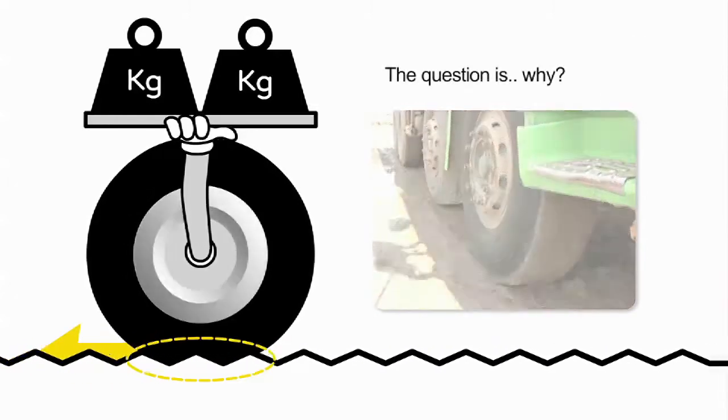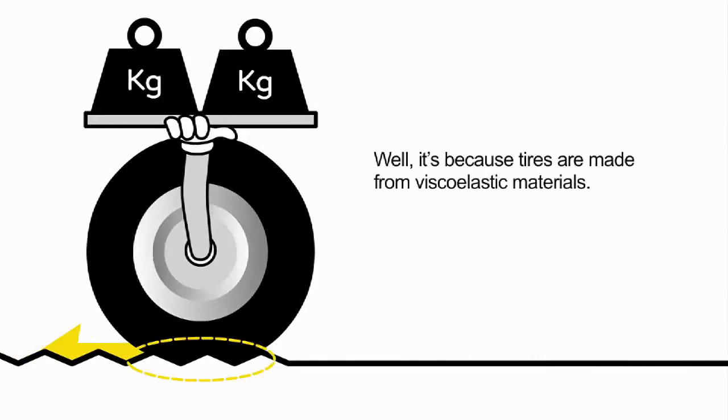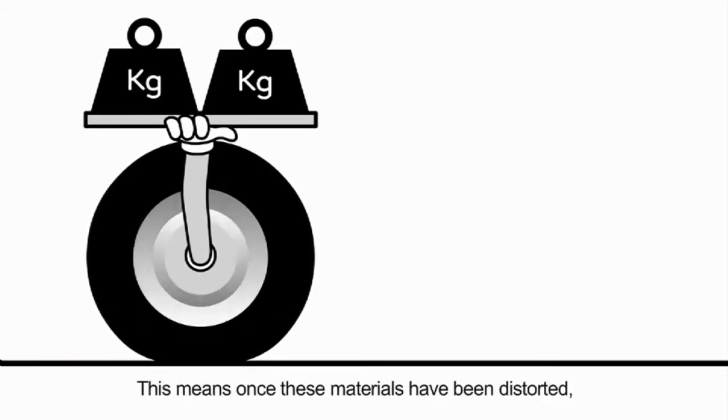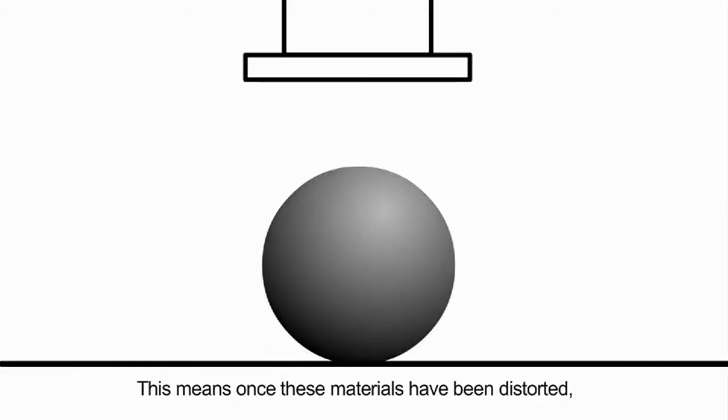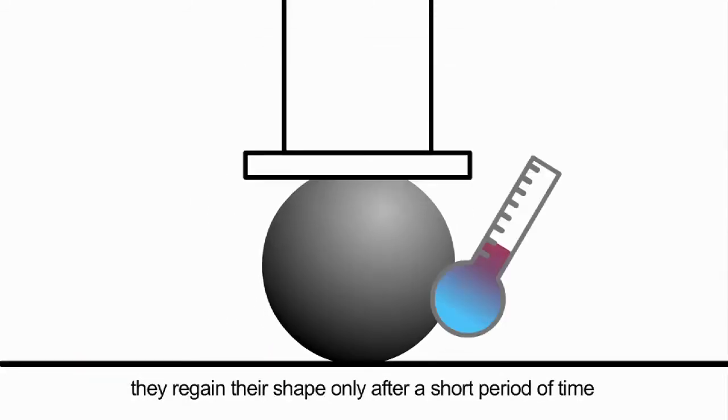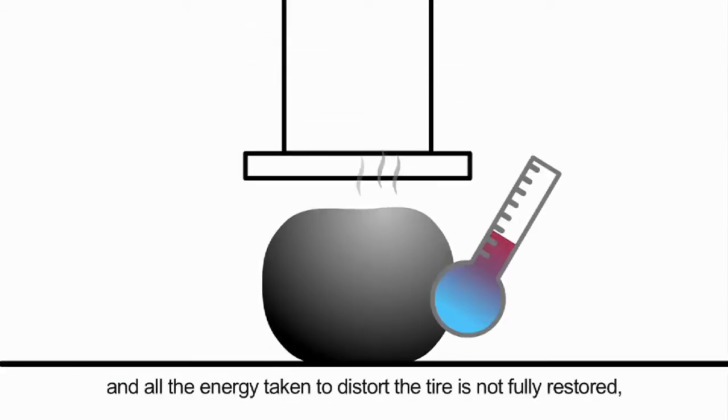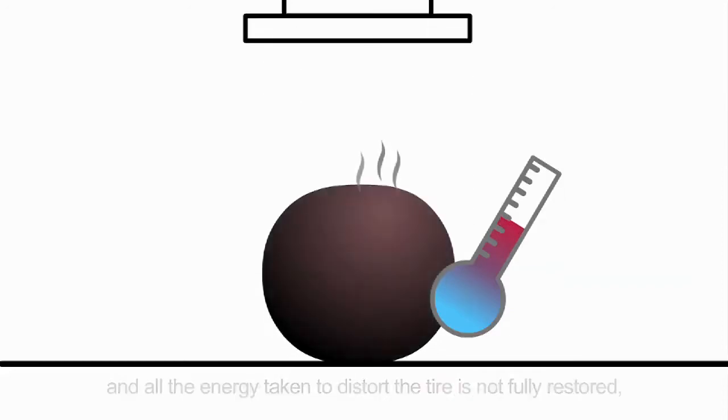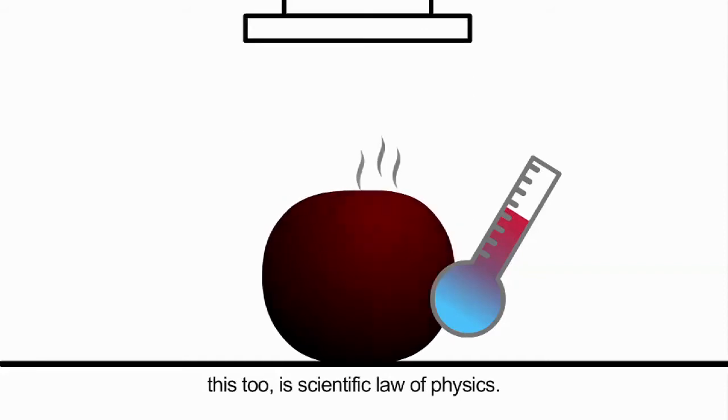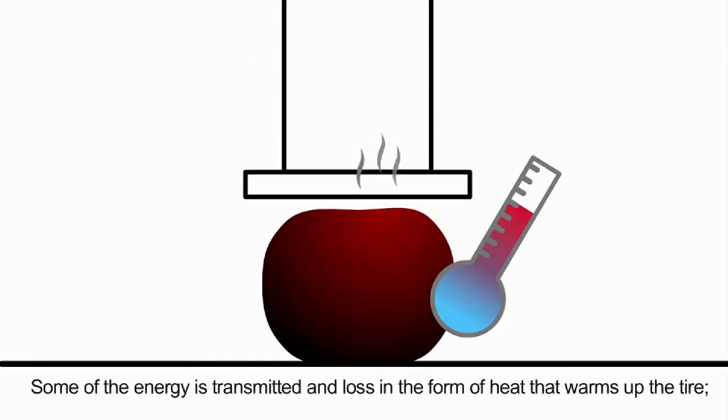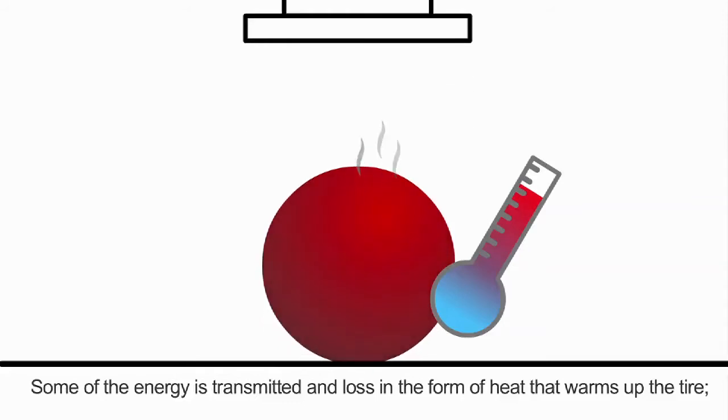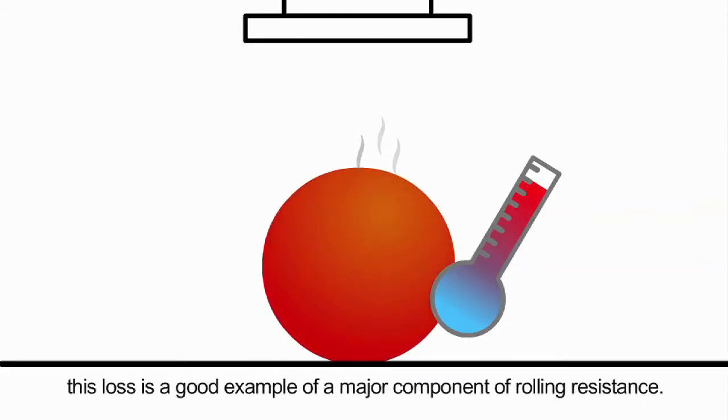The question is, why? Well, it's because tires are made from viscoelastic materials. This means, once these materials have been distorted, they regain their shape only after a short period of time, and all the energy taken to distort the tire is not fully restored. This, too, is scientific law of physics. Some of the energy is transmitted and lost in the form of heat that warms up the tire. This loss is a good example of a major component of rolling resistance.